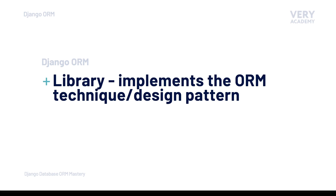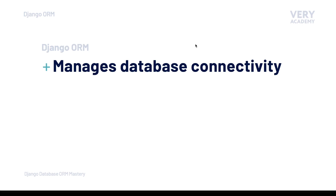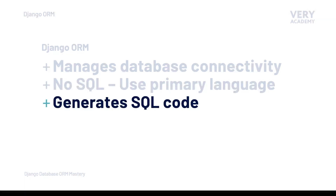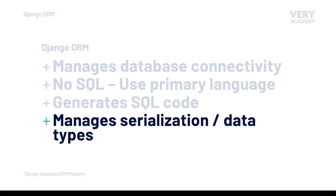The Django ORM, as a library, is a collection of code or modules that implements the ORM technique or design pattern. It provides the developer with tools to interact with the database without having to manage database connectivity, and without the need to learn SQL. The developer can therefore remain in their primary programming language — Python. The Django ORM manages the serialization of data, converting Python instructions into SQL and database-compatible data types, and returning database data into Python-native types.